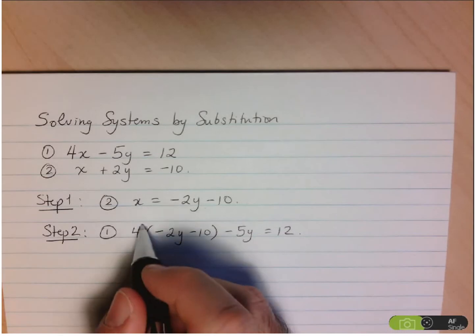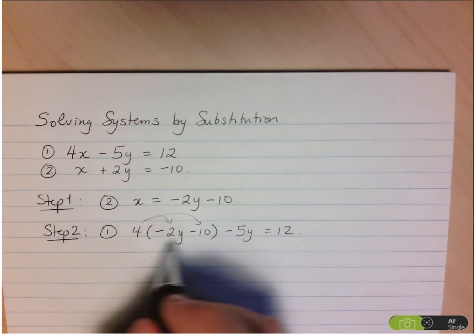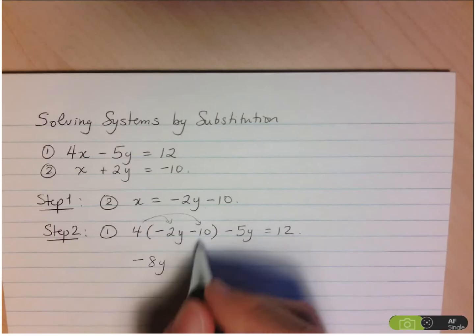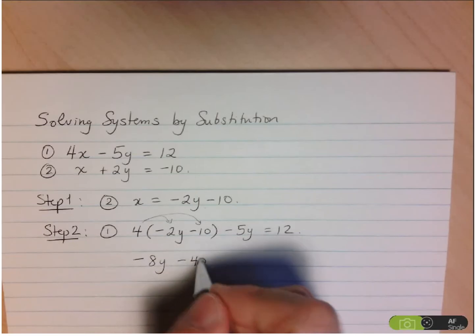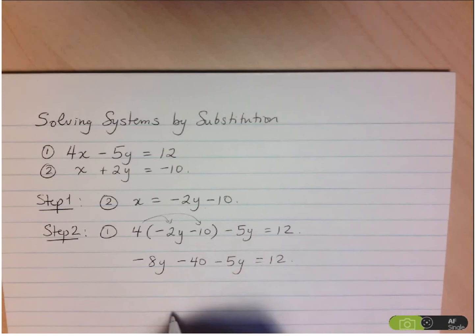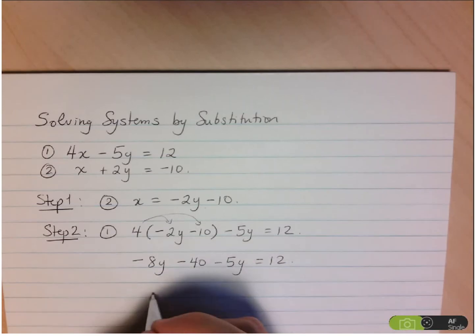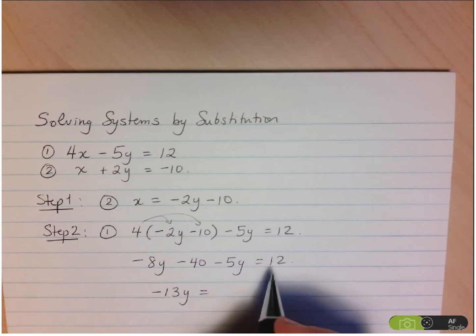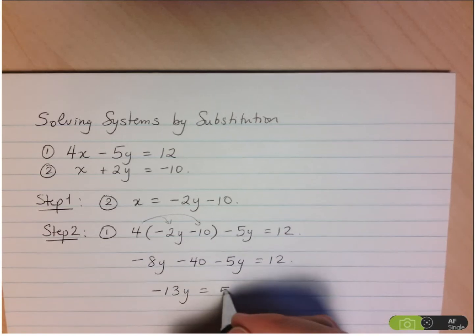So we start by distributing the 4. So we have 4 times negative 2y, negative 8y, and then 4 times negative 10 minus 40, and minus 5y equals 12. Bring the y's together. So negative 8 minus 5, we have negative 13y. And then here we have 12 plus 40. So that's just going to be 52.